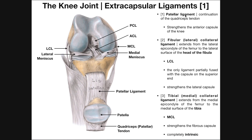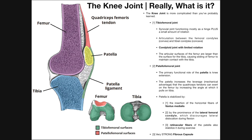Let's talk about the patellar ligament. The patellar ligament is a continuation of the quadriceps tendon. Here's our patella — we're looking at a lateral view. In green here is the patellar ligament, and we can see the patellar ligament is continuous right here with the quadriceps tendon.